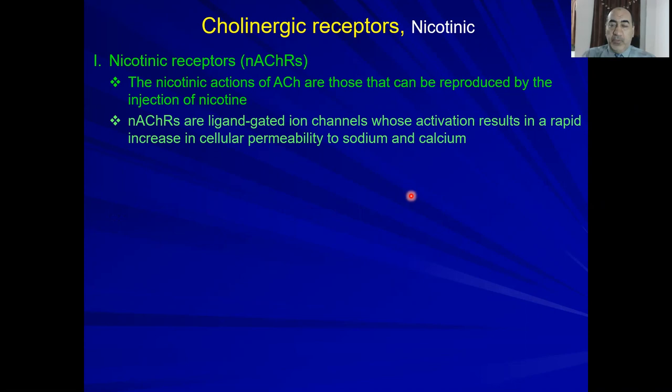Let's talk about nicotinic receptors first. We start with them because they are the beginning — in the beginning, they start from the CNS. Why are they called nicotinic? They are called nicotinic because the action of acetylcholine on these receptors can be reproduced by the injection of nicotine.